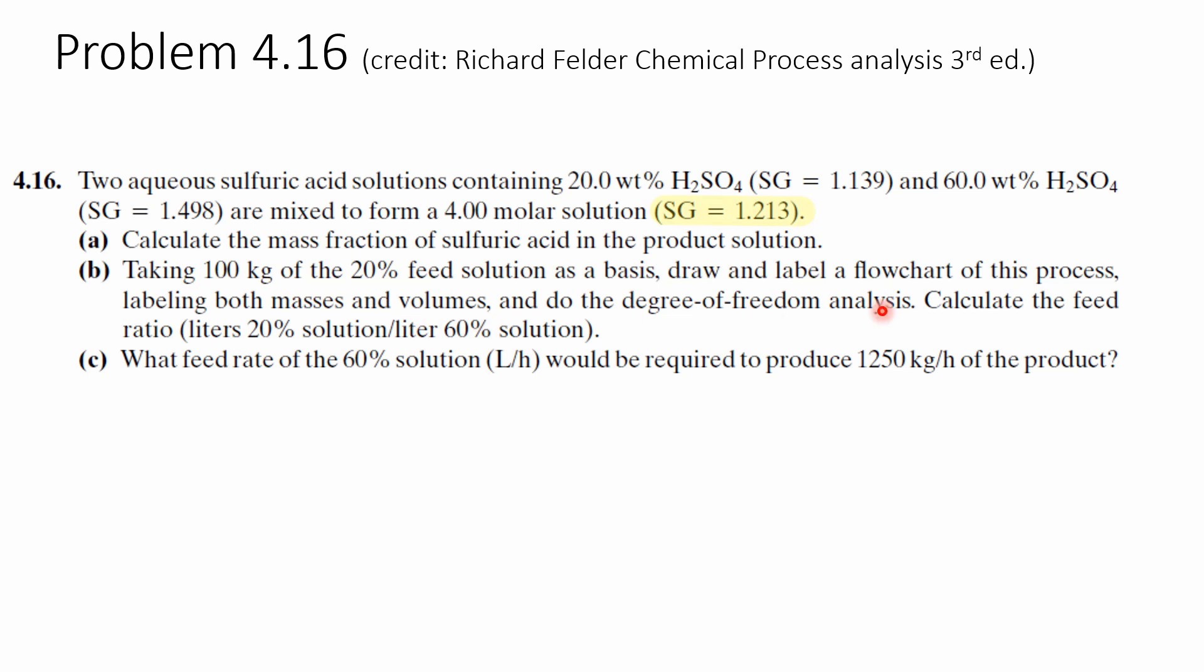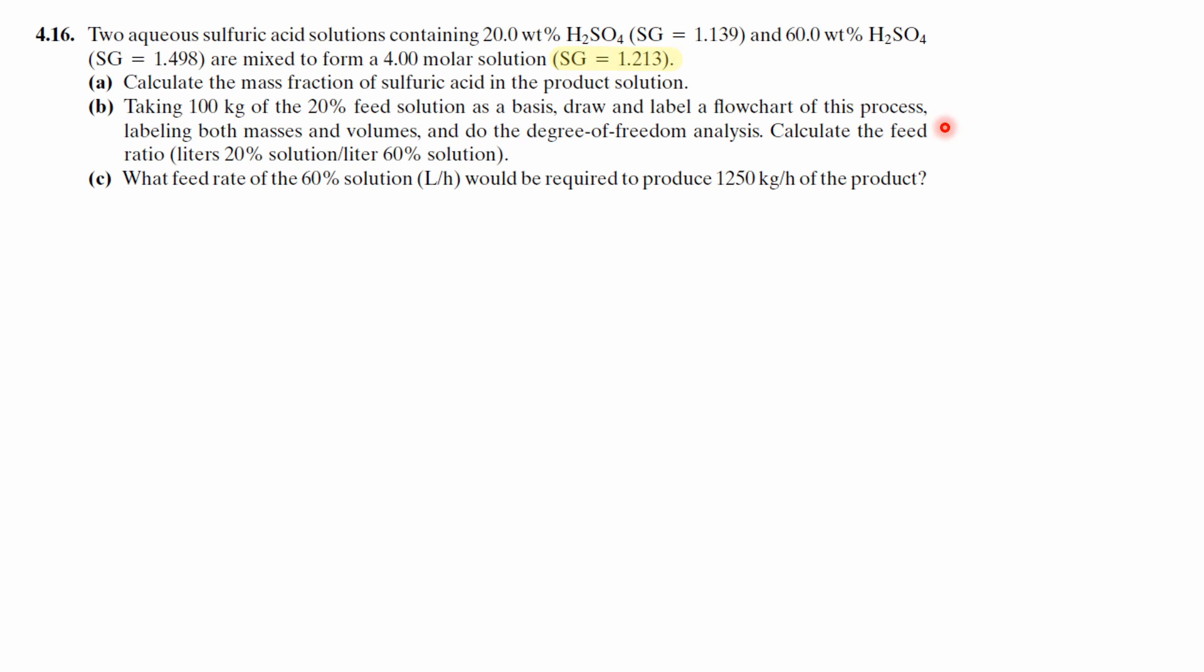Take a hundred kilograms of 20% solution as a feed as a basis. Draw and label the flowchart and calculate the feed ratio. And finally what is the feed rate that would be required to produce 1250 kilograms per hour of the product? I encourage you to try this out by yourself before continuing.